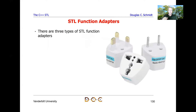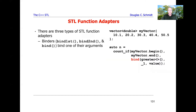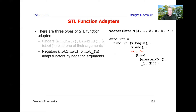There are three types of STL function adapters. The first type are the so-called binders, and there are three of them. Two are legacy and deprecated: bind_first and bind_second. There's a newer variant called bind that is preferred, although a lot of people prefer to use lambda functions instead. Then there are negators, which include not_one, not_two, and not_fn.